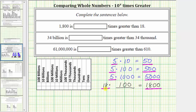Because 18 times 100 is equal to 1,800, this indicates that 1,800 is 100 times greater than 18.